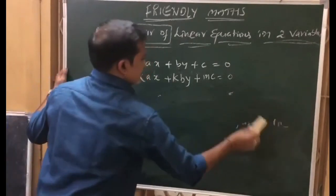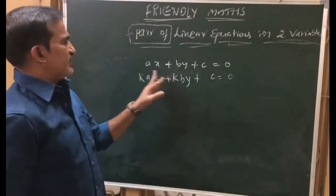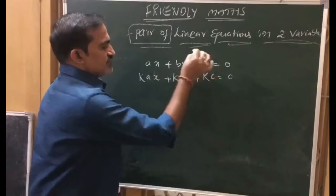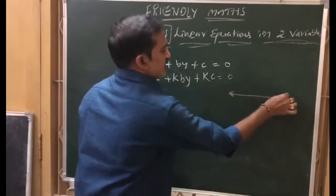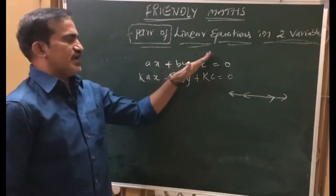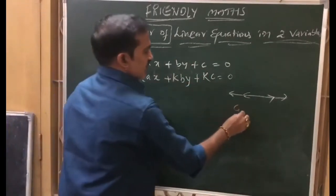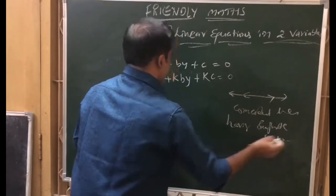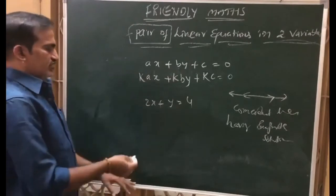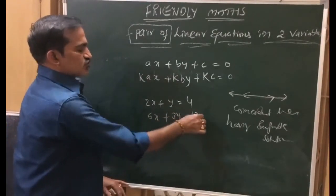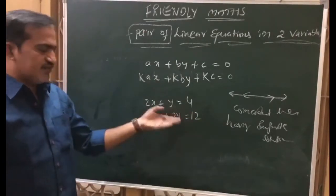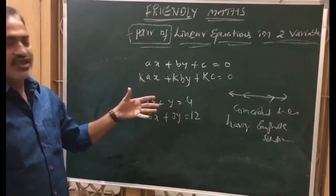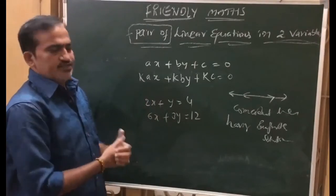Now for coincident lines — in parallel lines, x and y coefficients are multiplied by the same value but the constant by a different value. In coincident lines, all three — x coefficient, y coefficient, and constant — are multiplied by the same numerical value K. Then x coefficient ratio is 1 by K, y coefficient ratio is 1 by K, and constant ratio is also 1 by K. So all ratios are equal and these are coincident lines having infinite solutions. For example, 2x plus y is equal to 4; multiply everything by 3 to get 6x plus 3y is equal to 12. If you divide the second equation by 3 you get back the same equation — this equation is entirely dependent on the other, so these are called dependent linear equations.